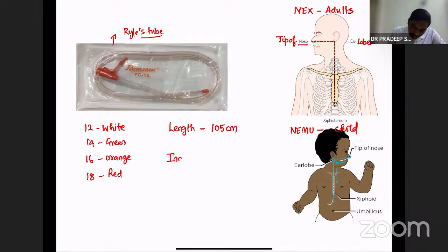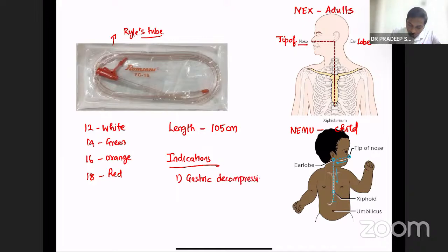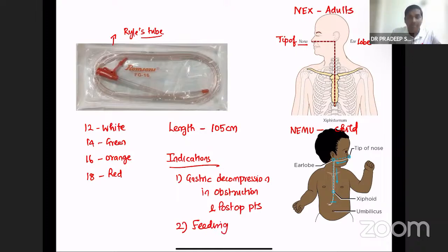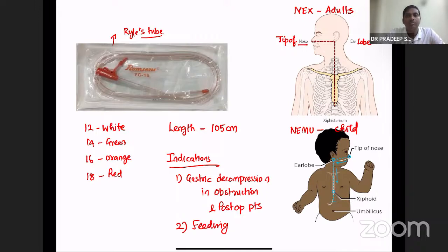Indications for Ryle's tube: gastric decompression in patients undergoing surgery or in obstruction, post-op patients. Also for feeding — in patients with neck cancers, oral cancer, or oropharyngeal cancers unable to swallow, Ryle's tube feeding is given. In patients with head trauma or spinal trauma who are not conscious, Ryle's tube feeding is an important form of nutrition.